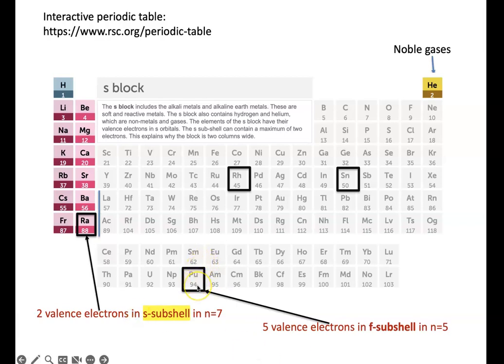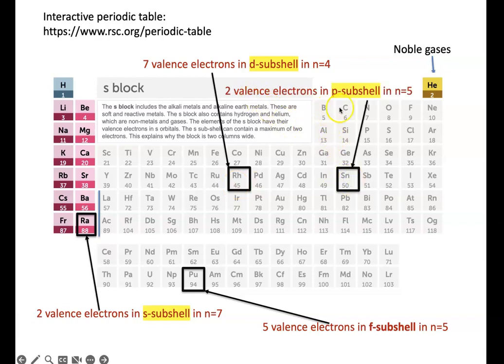This element has 5 valence electrons in N equals 5. This one has 7 electrons in 4D. And this element has 2 electrons in 5P energy level. I hope you go over this and practice again.